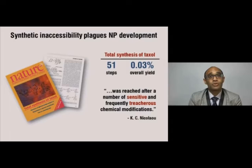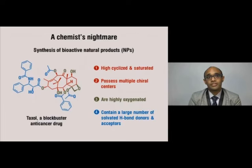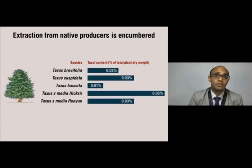Why is that? It's easier said than done. Total synthesis of natural products is encumbered. Look at the example of Taxol — 51 total steps with an abysmal overall yield. The very properties that make natural products excellent drugs are the very same properties that make them a nightmare for chemists.